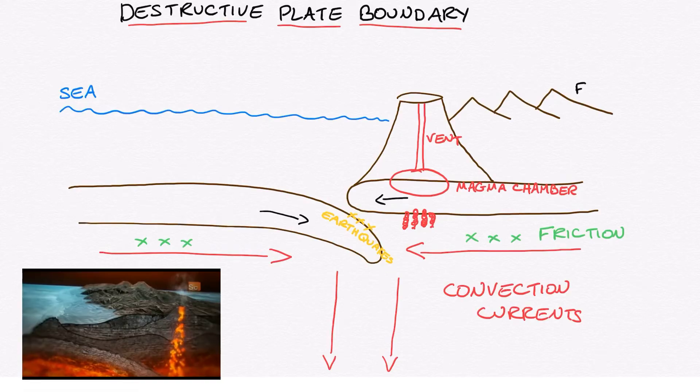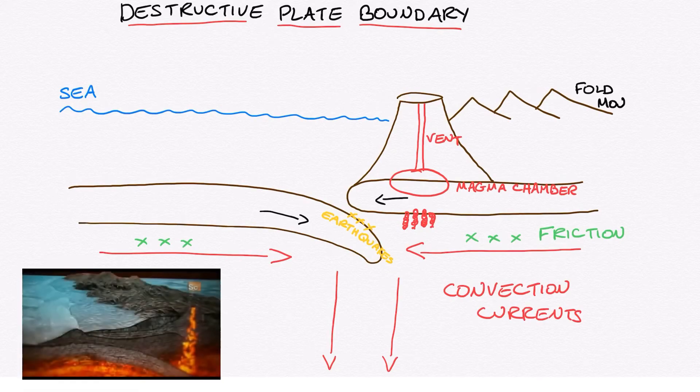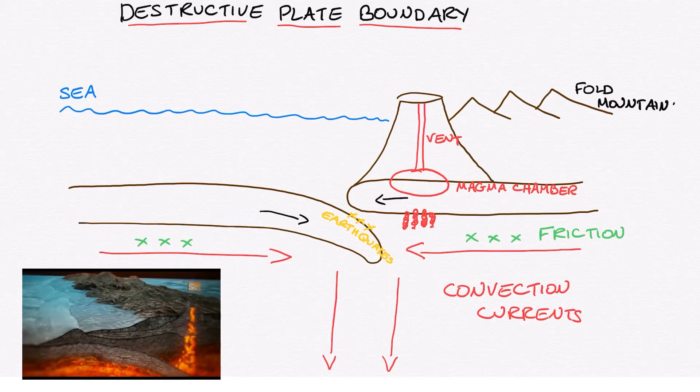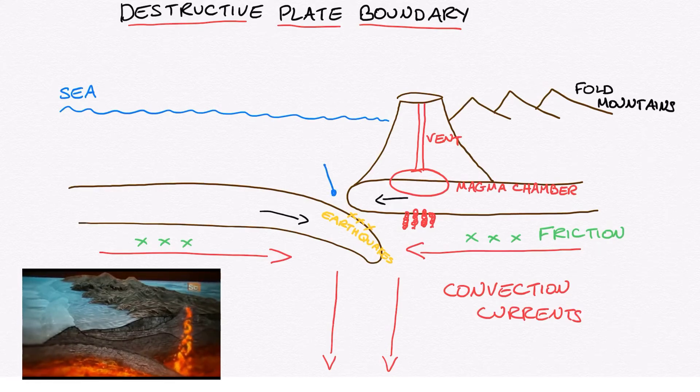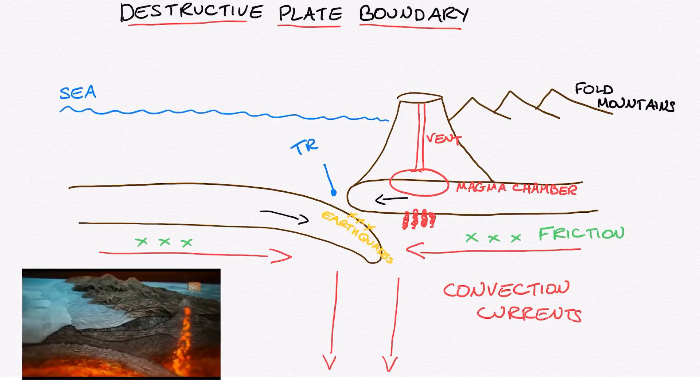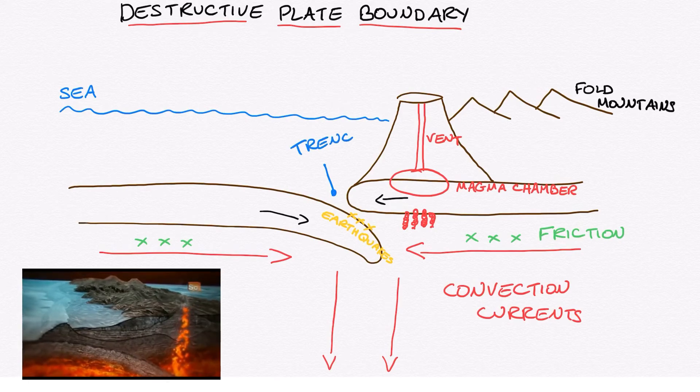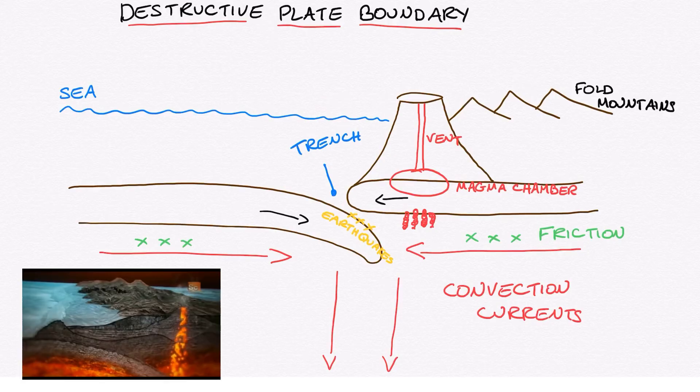In addition to this, on a destructive plate boundary the pressure of the oceanic plate pushing into the continental plate bends and folds the continental plate. This is why we get very large mountain ranges that are also found on continental plate boundaries. These are called fold mountains and some of the largest mountain ranges in the world are fold mountains.